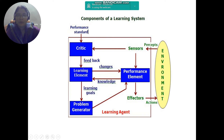Now, looking at this diagram, it shows the components of the learning system. The first one is the performance element, which is connected to the learning element. That is connected to the problem generator, and finally the critic is connected to the outside world. All these are connected to the environment.